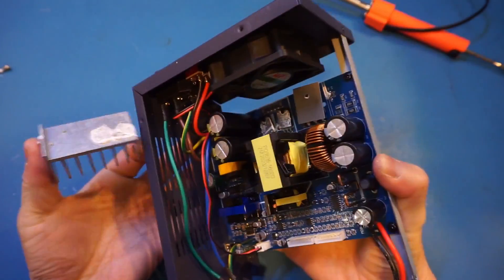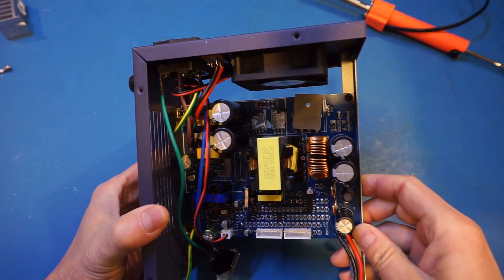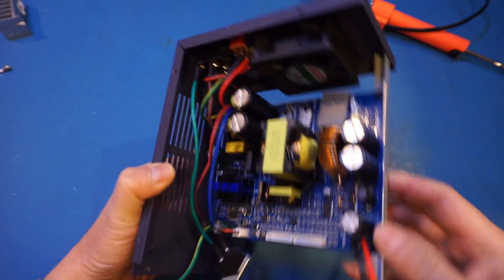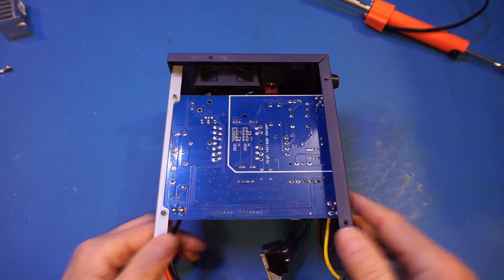Wow! We can see that the tiny heatsink is actually responsible for both the MOSFETs and the schottky diode. Since the heatsink is just pressed on, the surface contact may not be that great, especially if these power devices are not mounted evenly.